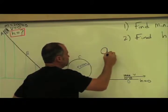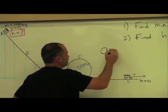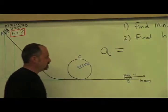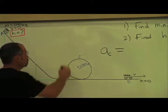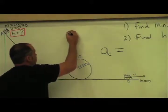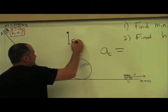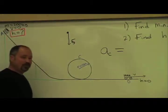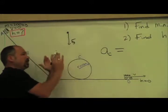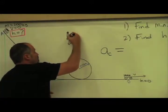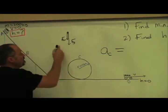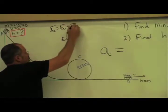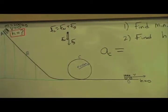We know that the centripetal acceleration comes from the centripetal force. If you're at the top of the roller coaster, there are two possible forces. You definitely have the force of gravity, because the roller coaster has mass. And then, if you're going faster than the minimum, you're also pushing up against the rails, so you have the normal force pushing down. In this case, the centripetal force will be the normal force plus the force of gravity.